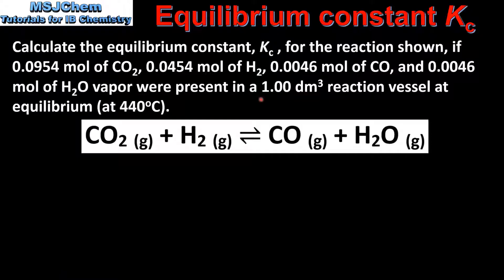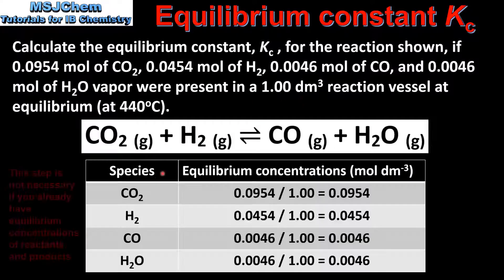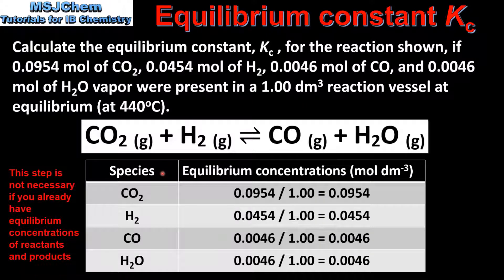We are also told the volume of the reaction vessel, which is 1 decimetre cubed. Next we will calculate the equilibrium concentrations of reactants and products by dividing the amount in moles by the volume of the container, which is 1.00 decimetres cubed.